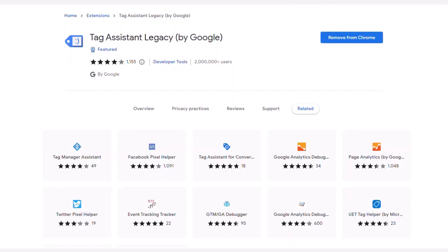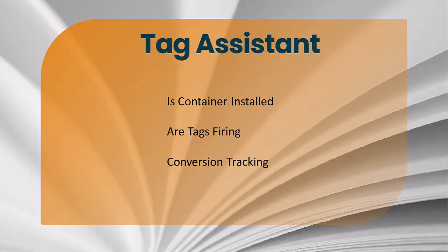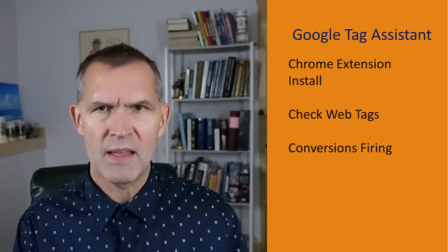That is Google Tag Assistant and how to install it — a very simple process. The main thing you want to do with it is make sure your containers are working, your tags are firing, and most importantly, your conversions are tracking. You can also do this in Google Tag Manager's preview mode. Google Tag Assistant is something I use on a daily basis. It's one of the first things you want to set up when adding a new website, whether it's an e-commerce store, a blog, or a lead generation site, because you'll want to install GA4 and make sure all your tags are working and firing to get the best and correct data in GA4.